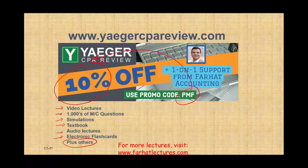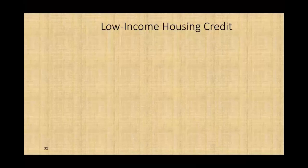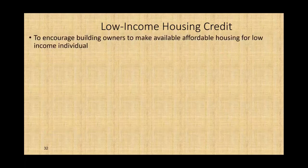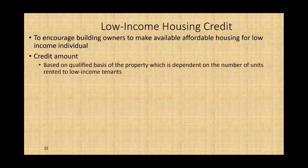Let's take a look at the first general business credit, which is low income housing credit. The purpose of this credit is to encourage home builders to make available affordable housing units for low income individuals. Congress wants to combat homelessness and make sure low income individuals have affordable housing. Basically, you build the building and rent it for low income housing and they'll give you a tax credit. The credit amount is based on the qualified basis of the property, which is dependent on the number of units rented to low income.